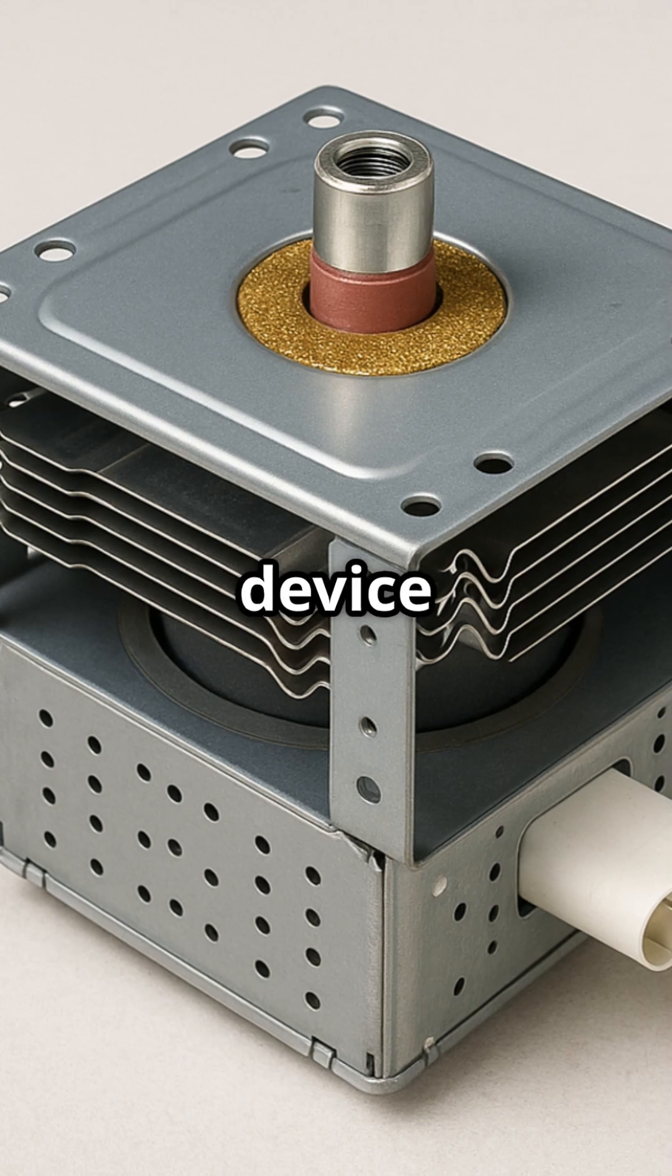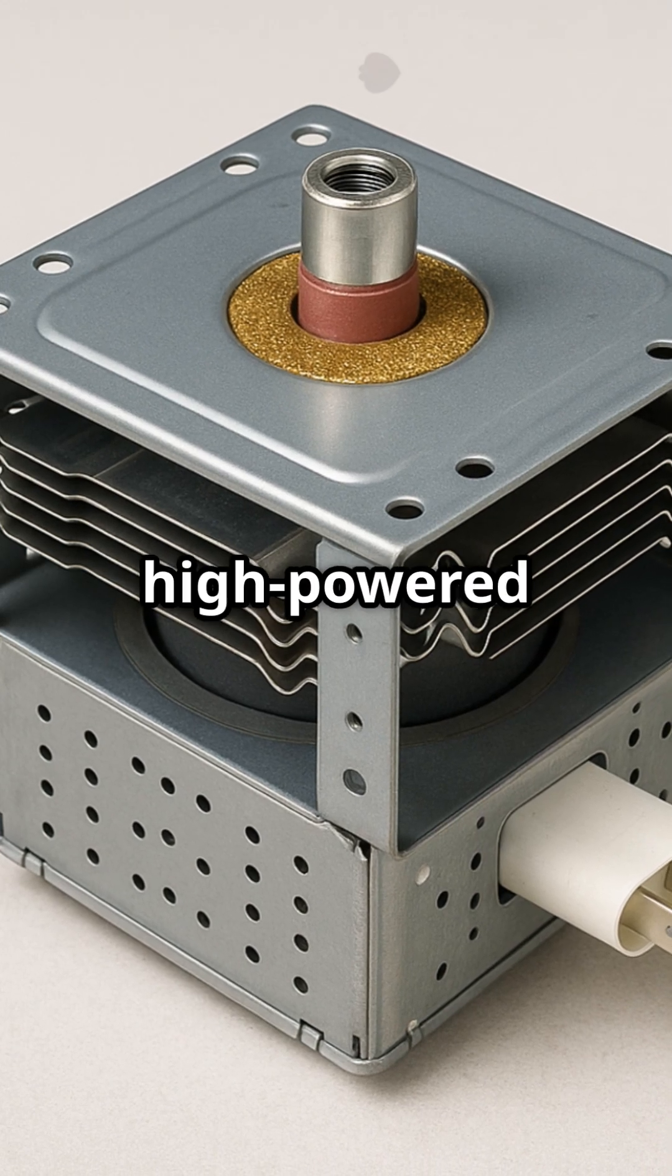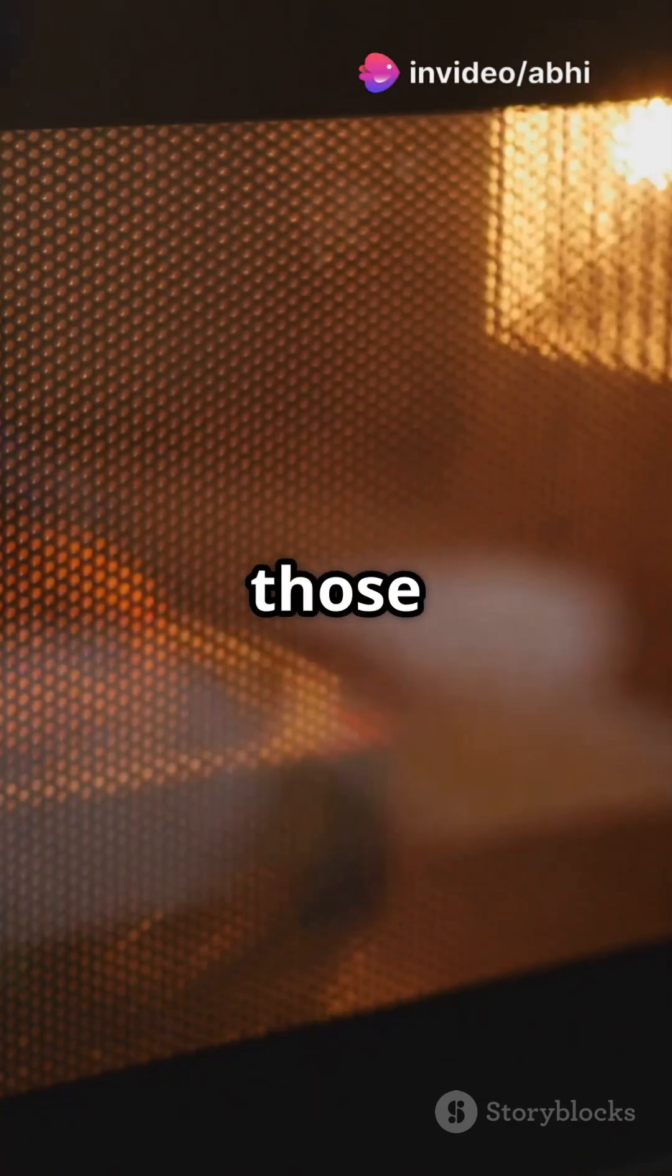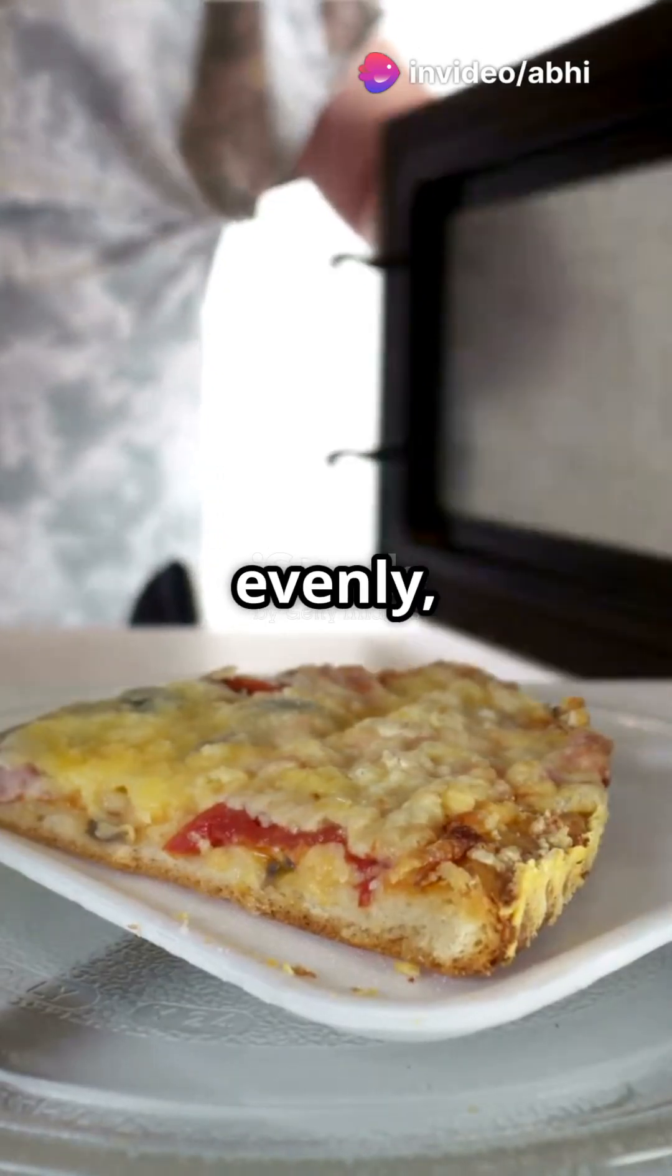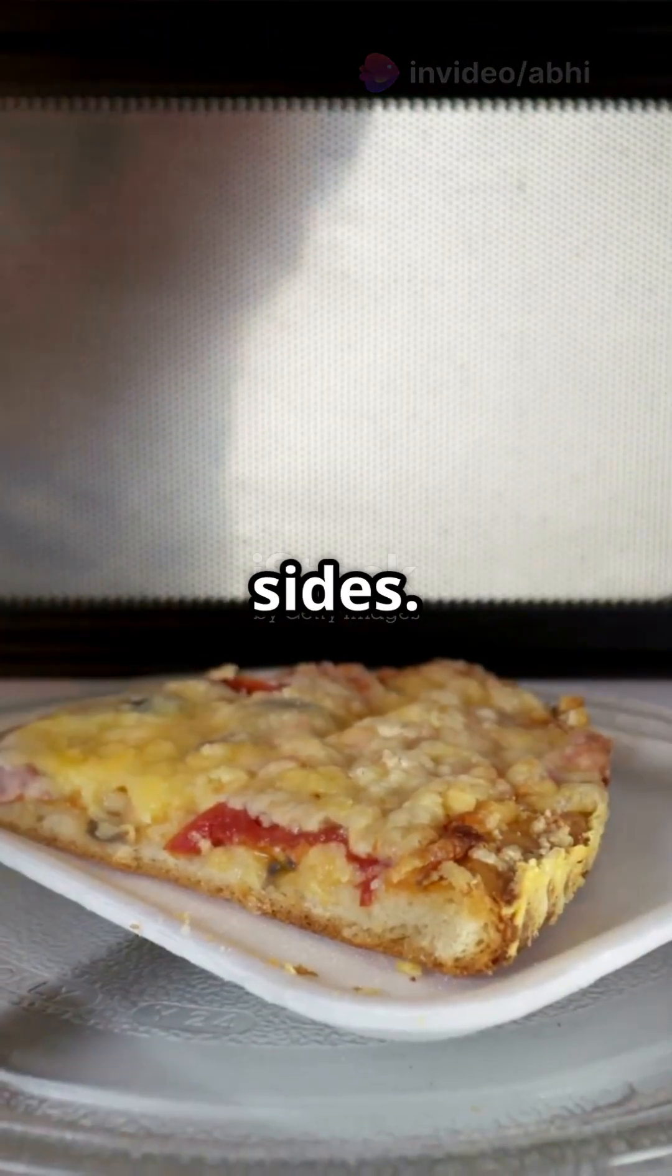Inside your microwave, there's a device called a magnetron, a high-powered vacuum tube that generates those microwaves. These waves bounce off the metal walls, spreading evenly, and penetrate your food from all sides.